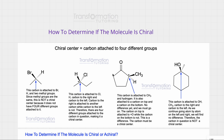Let's look at this molecule. This carbon is attached to a hydrogen, a carbon, a carbon, and a carbon. This carbon is not attached to any more carbons, but these two are — so this carbon is different. This carbon is attached to a double bond O and this one is not — that's a difference. So this carbon is a chiral center because it is attached to four different groups.